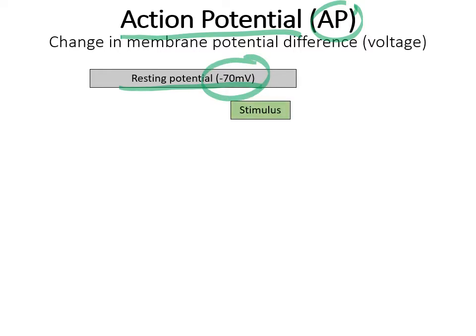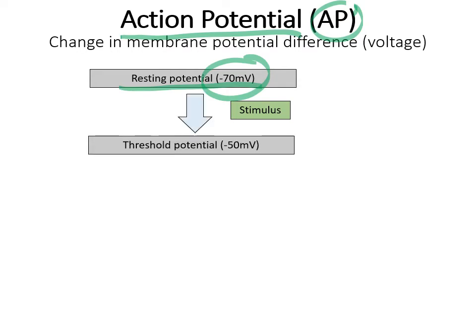If there's a stimulus, it will cause this voltage to change. If it changes enough — going from negative 70 increasing to negative 50, because the stimulus causes some of those ions to move from one side to another — this can decrease this resting potential. If it gets to the point where it increases to negative 50 millivolts, then this action potential will take place. Anything less than that — a small enough signal — will just be ignored. It will not cause this cascading series of events.